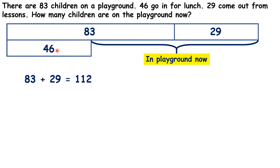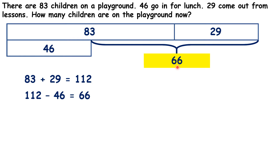But 46 of them went in for lunch, so we need to subtract 46 from our total of 112. If you use column subtraction to work this out, you should get 66. So that's the number who are in the playground now.